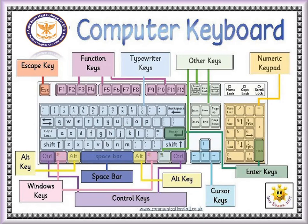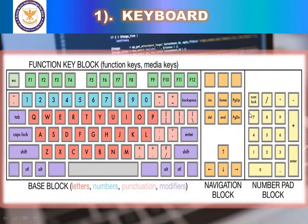The numeric keypad on the keyboard functions like a calculator. It has arithmetic operators like plus, minus, multiply, and slash used in arithmetic operations. The numeric pad also has an extra enter key and a num lock key. The num lock key is used to activate and deactivate the numeric pad — pressing it enables or disables the numeric keypad.